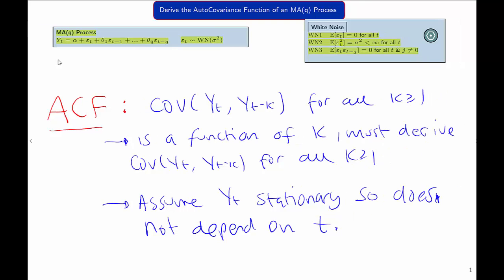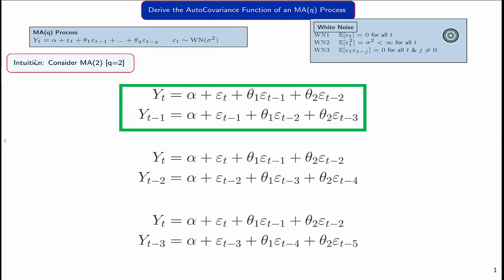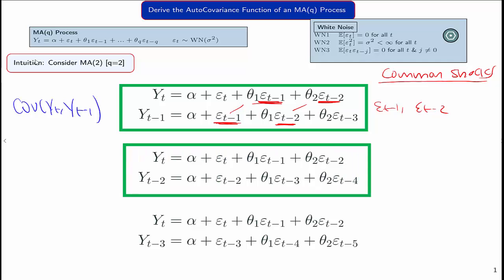To give some intuition, we'll firstly take the MA(2) model, the case where q equals 2, so that yt goes back only to epsilon t minus 2. First off, let's look at deriving the covariance of yt and yt minus 1. Looking at yt and writing yt minus 1 by lagging all elements back 1, we can see that the only shocks which appear in both yt and yt minus 1 are epsilon t minus 1 and epsilon t minus 2. All the other shocks are in different time periods, and therefore they're uncorrelated.